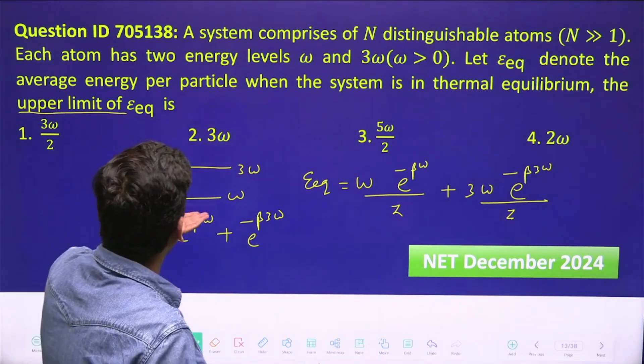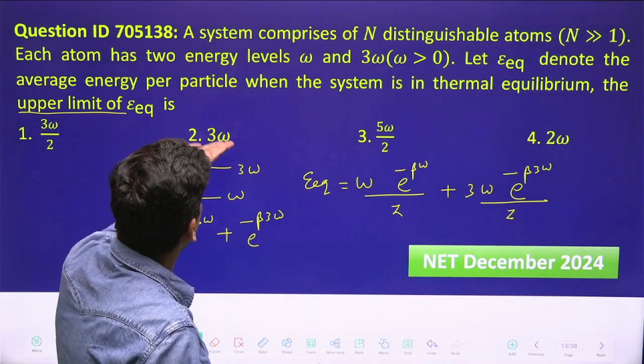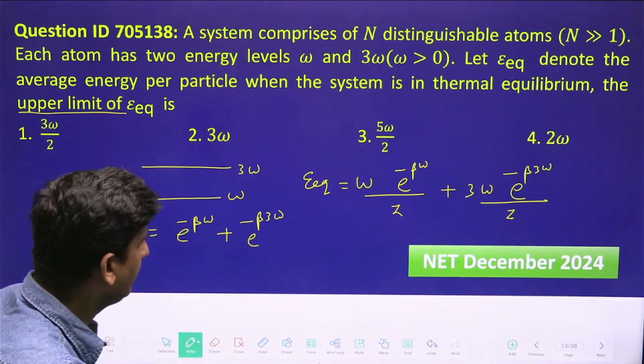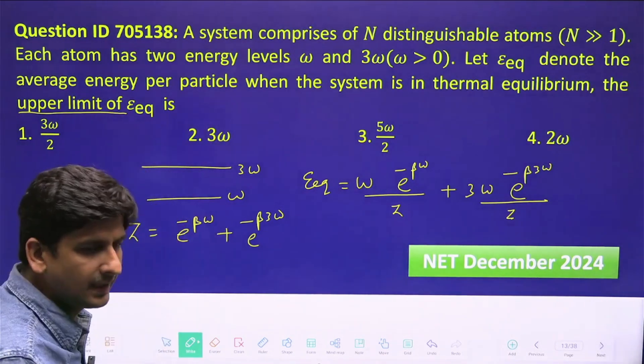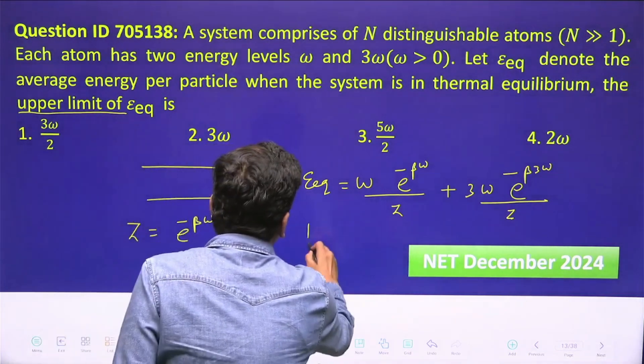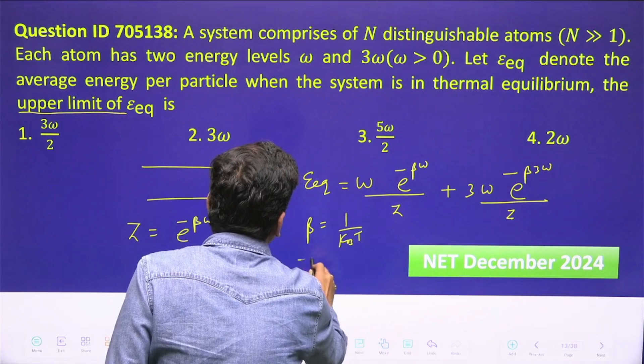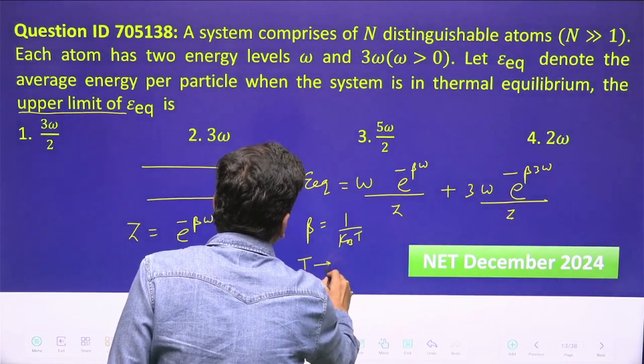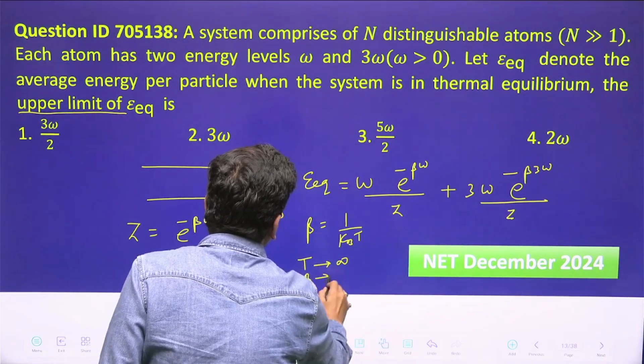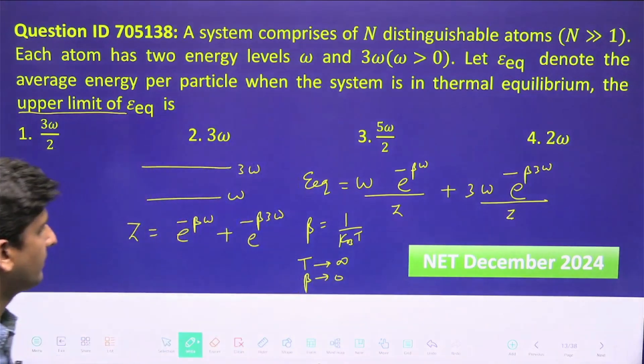Upper limit of average energy means energy should go towards three omega. For that, we have to increase the temperature. Beta is equal to 1/(k_B*T), so temperature high means beta approaches zero.